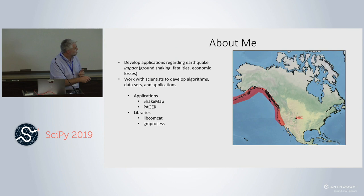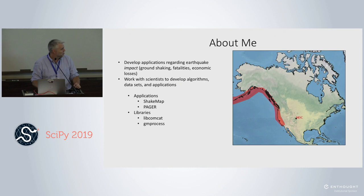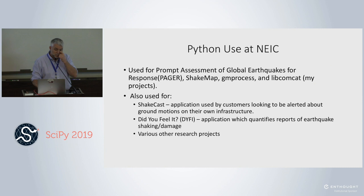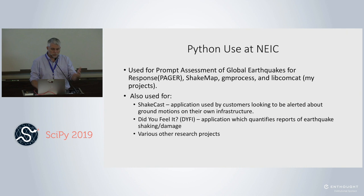In North America, this is generally speaking where the earthquake hazards are — this is where my office is, and that's not an accident. It turned out to be a really good thing last week when we had two big earthquakes in Southern California. Here's a general overview of Python use at NEIC: it's used for PAGER, which stands for Prompt Assessment of Global Earthquakes for Response, the ShakeMap system, the Ground Motion Processing Library, and libcomcat — the projects I work on.